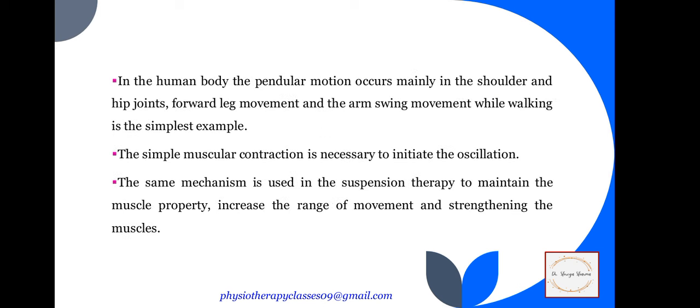In the human body, the pendular motion occurs mainly in the shoulder and hip joints. If you leave your hands at the side and rotate the arm to and fro, that is pendular motion. Simple muscular contraction is necessary to initiate the oscillation. This mechanism is used in suspension therapy to maintain muscle properties, increase the range of movement, and strengthen the muscle.